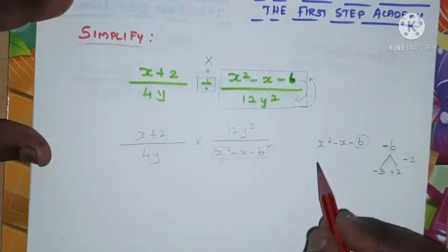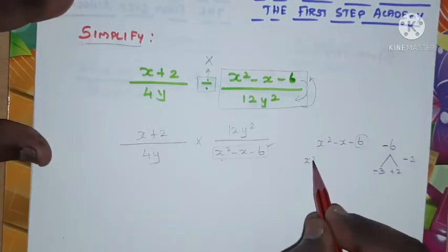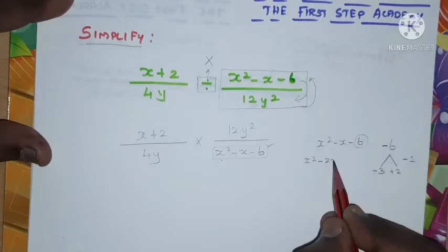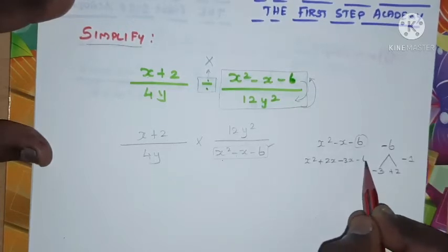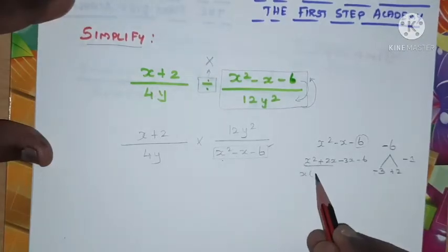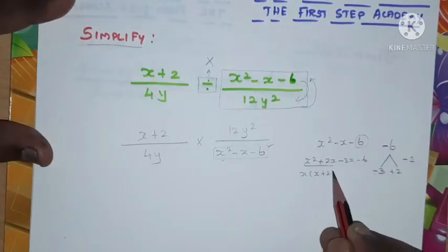So I'm going to split this: x²+2x-3x-6. Look at these two terms, x is common, so I'm taking it outside, so (x+2) remains.